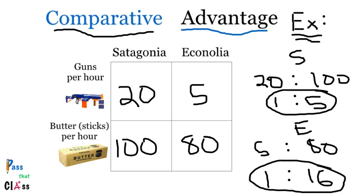So which country has the lower opportunity cost for producing guns? If Satagonia produces 1 gun per hour, it only has to give up 5 sticks of butter. But if Econalia produces 1 gun per hour, it has to give up 16 sticks of butter. So Satagonia has the lower opportunity cost for producing guns. According to comparative advantage, Satagonia should produce guns and Econalia should produce butter.